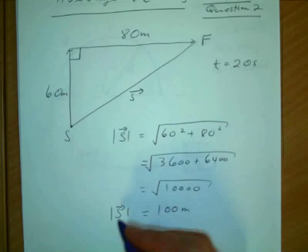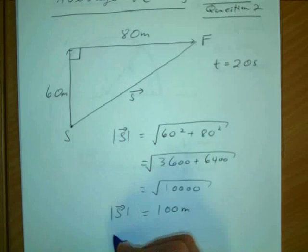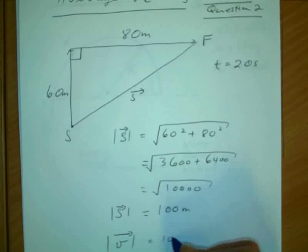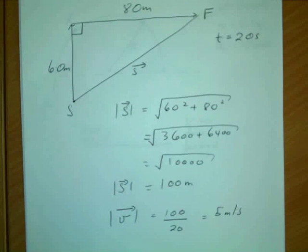We're asked to find the magnitude of the velocity, so that's 100 divided by 20, which is five meters per second. All right, that's the answer. Got it?